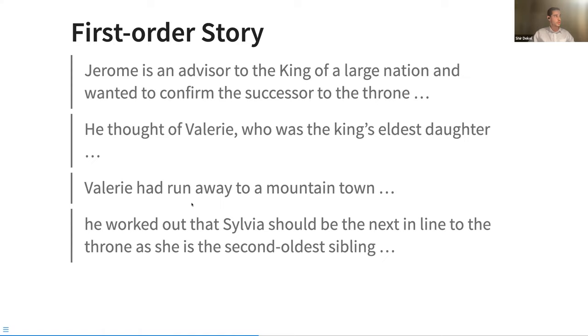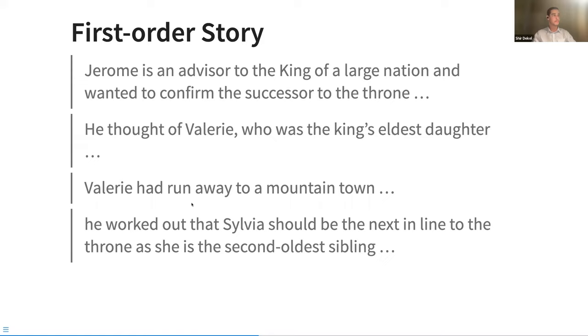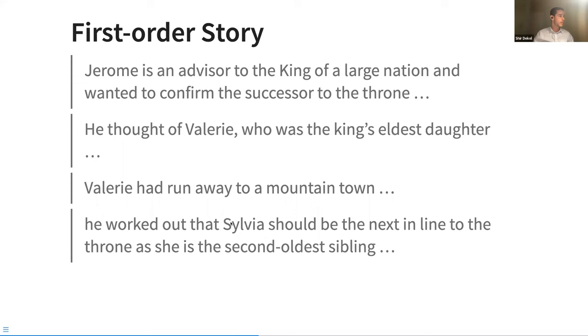As for the first order relational story, this was a story about someone who was an advisor to a king and there was a succession to the throne, and one daughter who was meant to be there ran away, and then so he had to work out who's the next person. Well, how did he do it? He had to think who the next person to the throne would be. So the idea here was that the key part of this was the element of succession. You start with one component and then you move on to the next one in the sequence. Whereas here, the surface story, the emphasis was on this change from the letter E to the letter F.